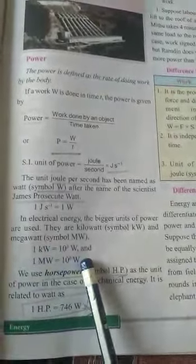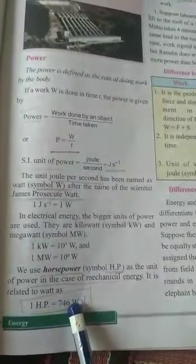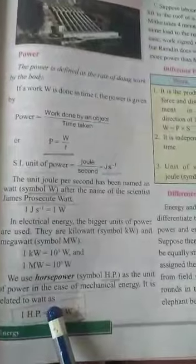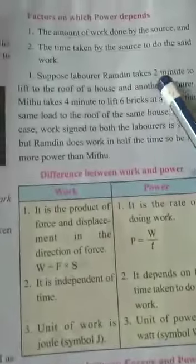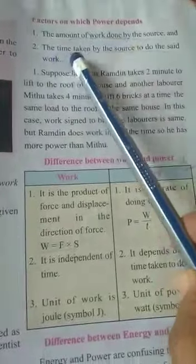The more bigger power, horsepower, the symbol is HP. One horsepower is equal to 746 watt. This relation is also important. And the factors on which power depends, that is amount of work done and the time taken.